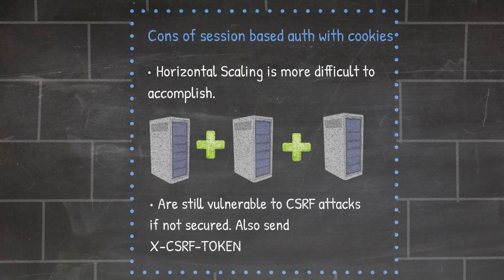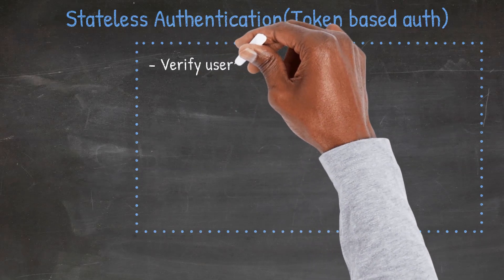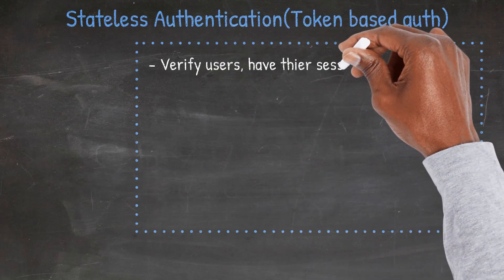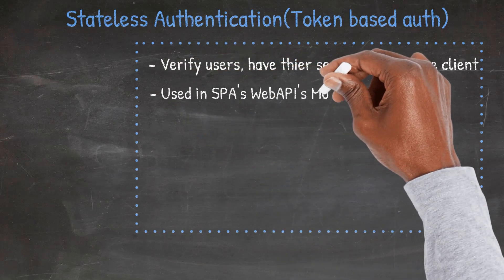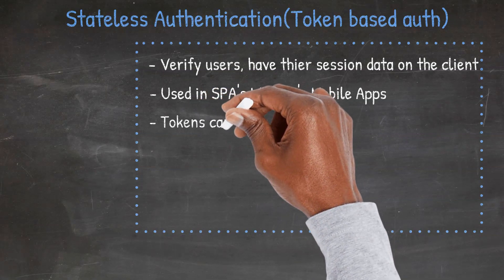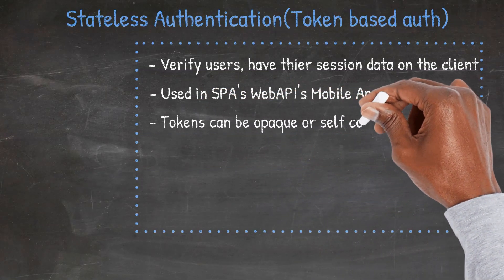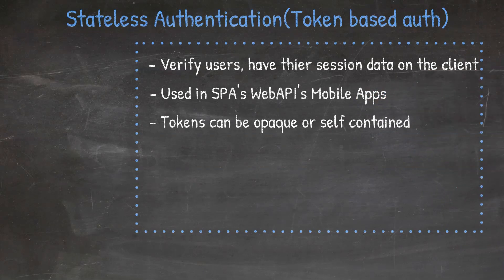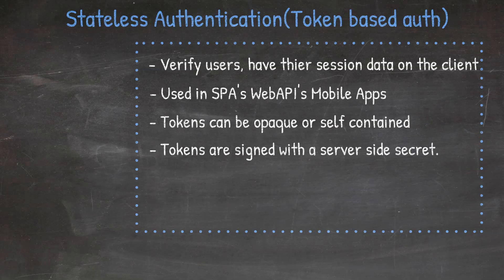Stateless authentication, also known as token-based authentication, is a way to verify users by having much of the user information data on the client-side or the browser storage. Tokens are widely used in single-page web applications, web APIs, and mobile apps. Tokens can either be opaque like sessions or self-contained. Self-contained in this context means that they can contain meaningful user data. Self-contained tokens reduce database queries but expose our applications to cross-site scripting attacks. Tokens are signed with a server-side secret to prevent manipulation.